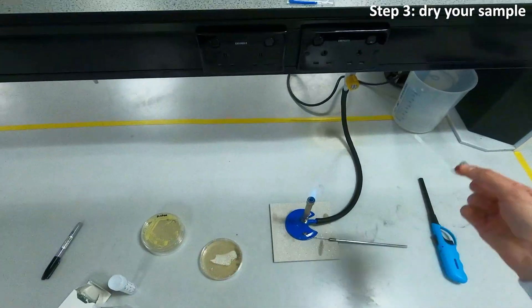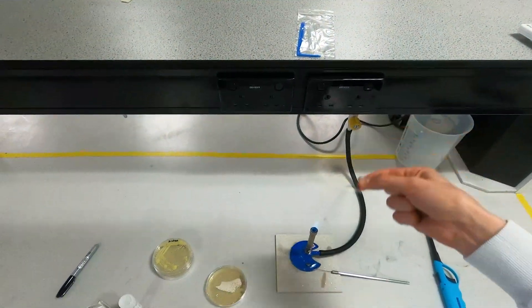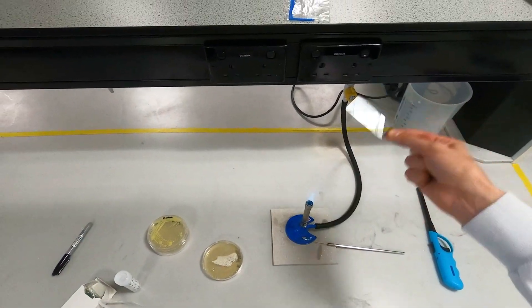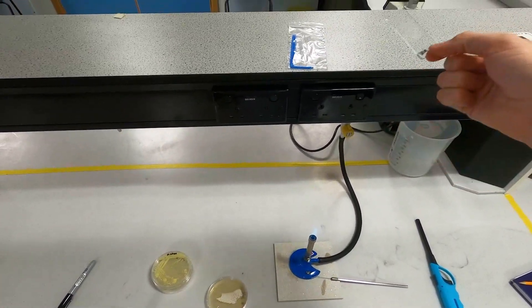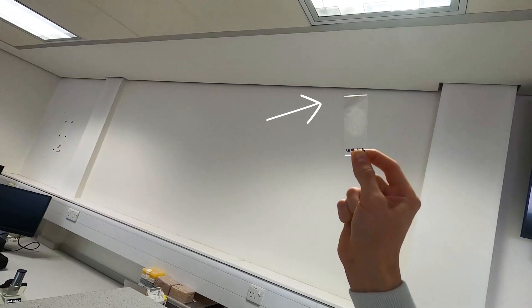Now you're going to use the Bunsen burner to heat up your slide just a little bit to evaporate the water off, but you don't want to get it too close or it'll thermally lyse your sample. Once your sample is dry it should look kind of cloudy white and slightly opaque, something like that.